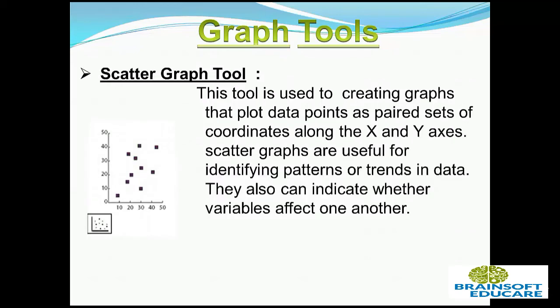Scatter graph tool: this tool is used for creating a graph that plots data points as paired sets of coordinates along the x and y axis. Scatter graphs are used for identifying patterns or trends in data. They can also indicate whether variables affect one another. This is the symbol of the scatter graph tool.